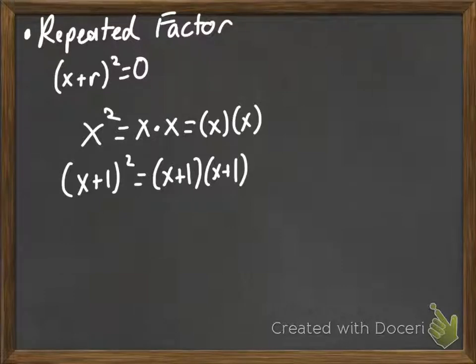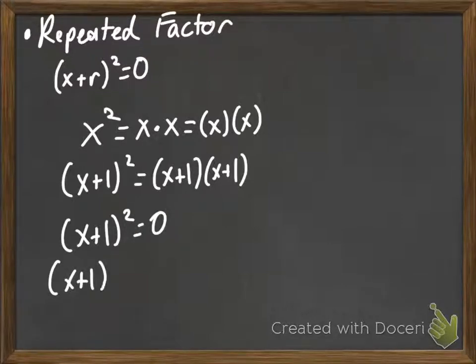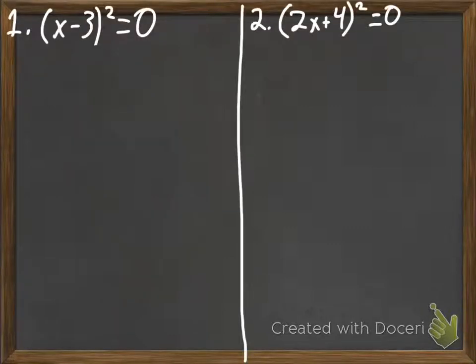So, if we had this actually set to 0, you could rewrite it as x plus 1 times x plus 1 equals 0. So, you could rewrite it like that. And then you could solve it using our zero product property. Or, you could figure out another way to solve it. I'm not going to tell you that other way. I want to see if you can figure that out on your own.